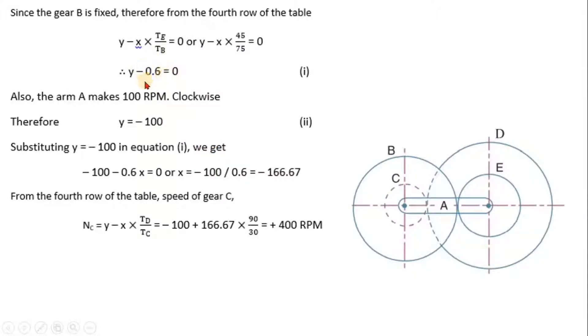Substituting y = -100 in this first equation we get, so -100 - 0.6x is equal to 0, therefore x is equal to -100/0.6 which comes to -166.67.